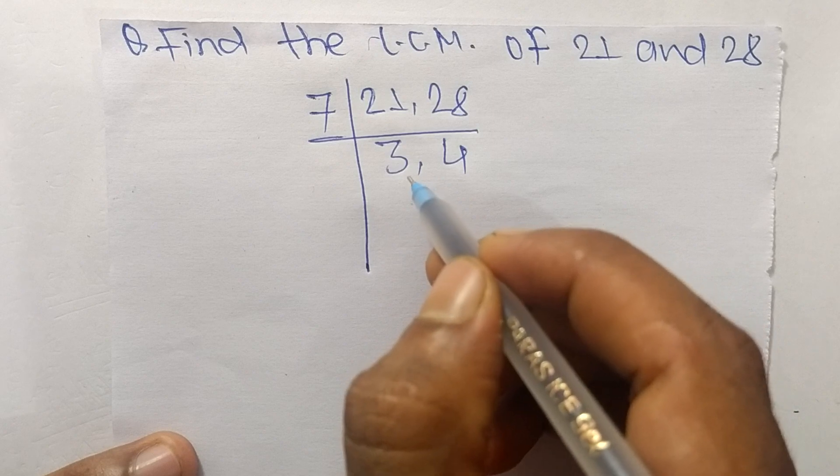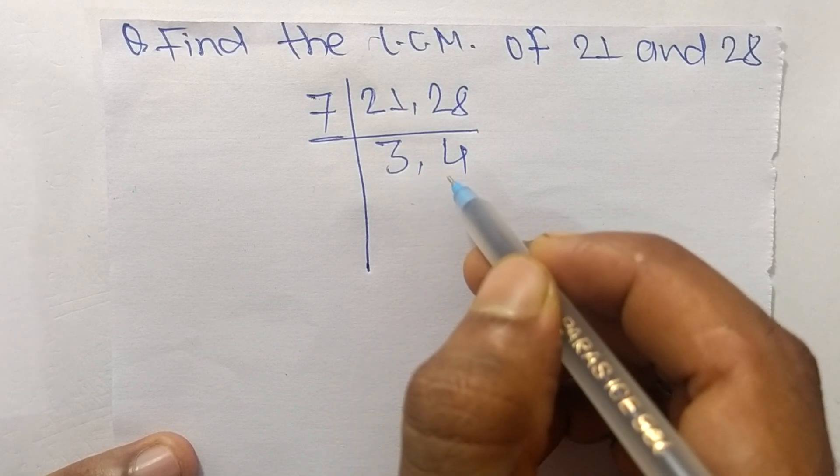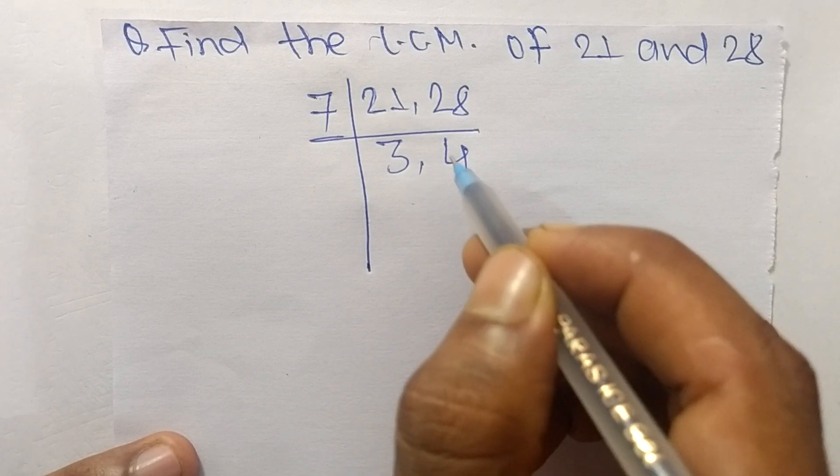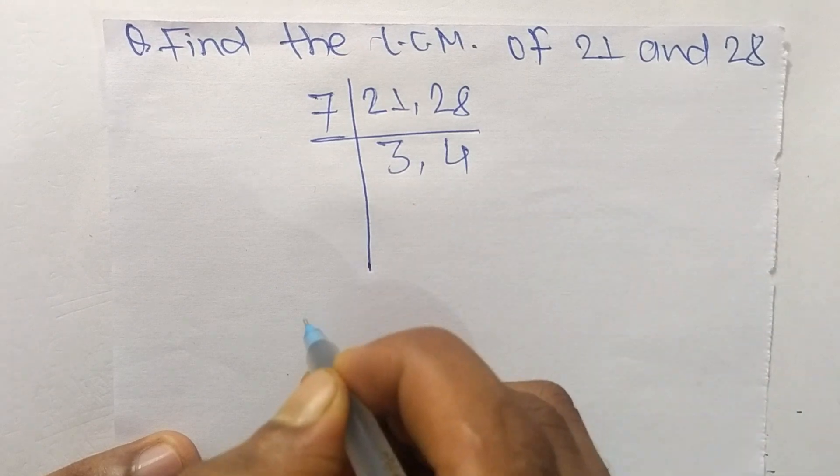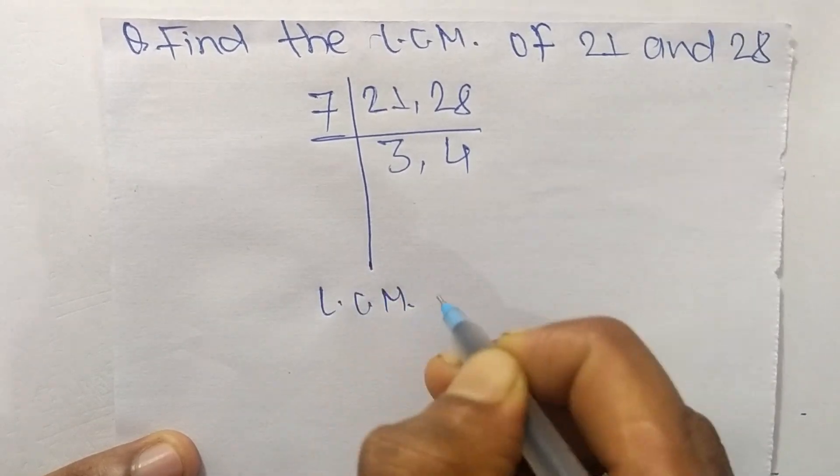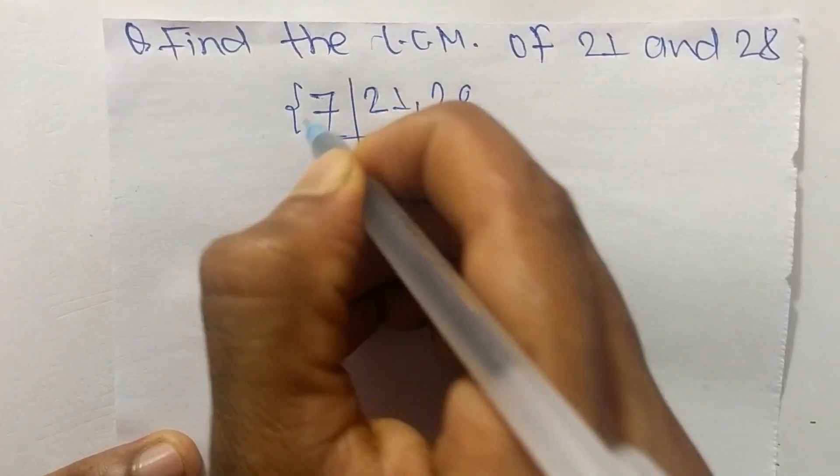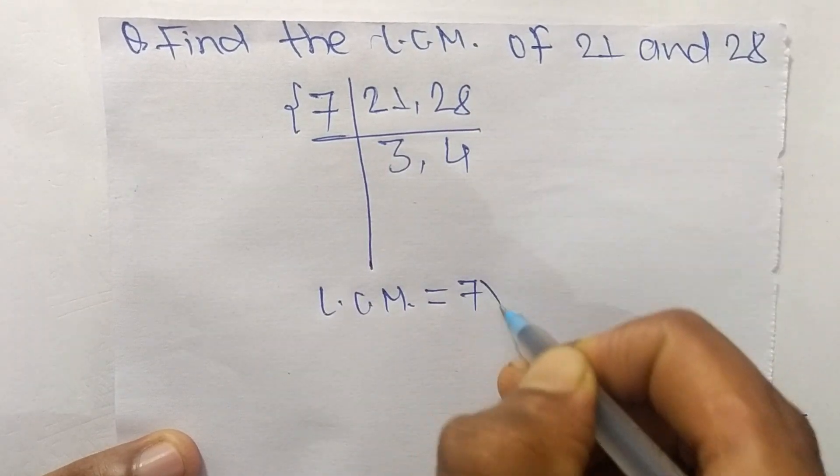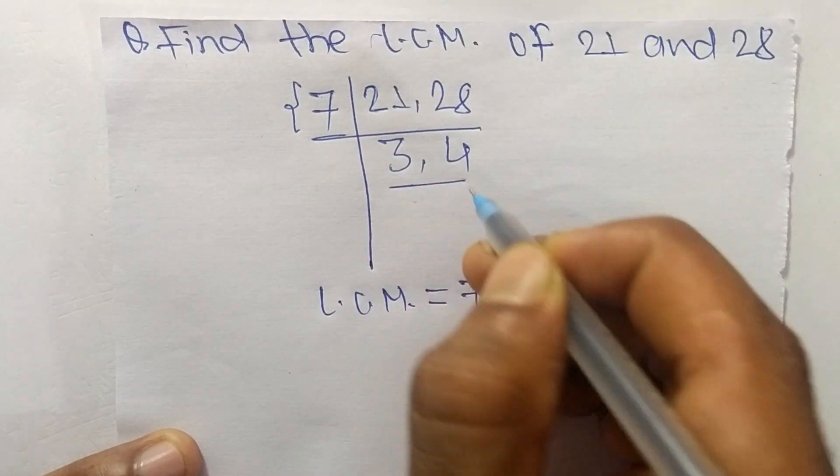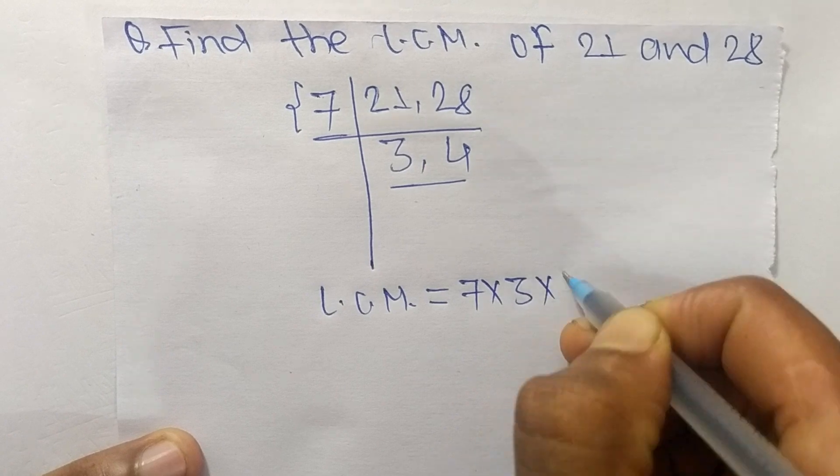Now we have 3 and 4, which are not exactly divisible by the same number. So the LCM is equal to, from this part it is 7, and from this part it is 3 times 4.